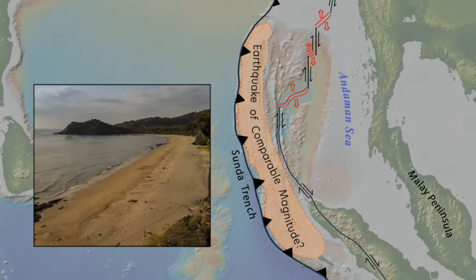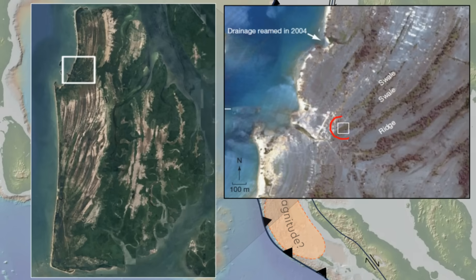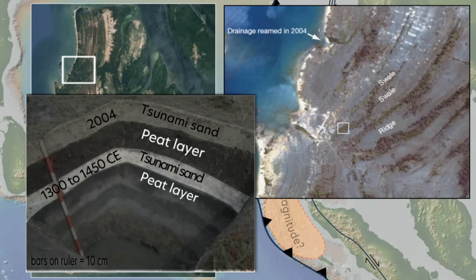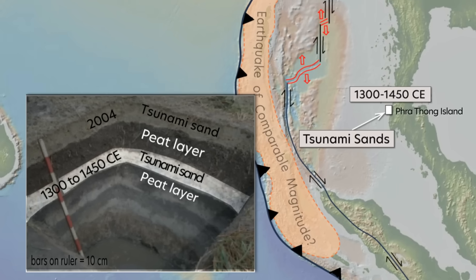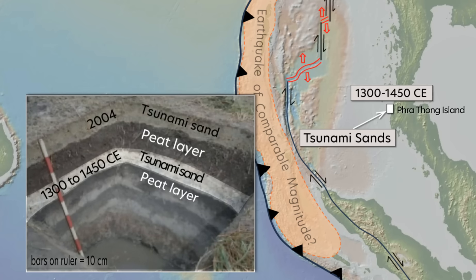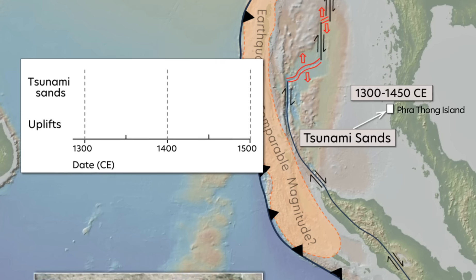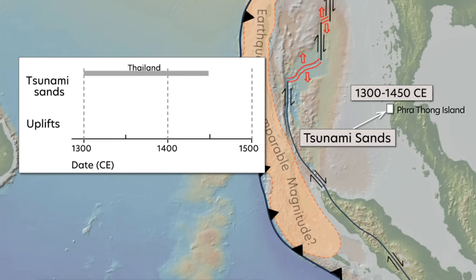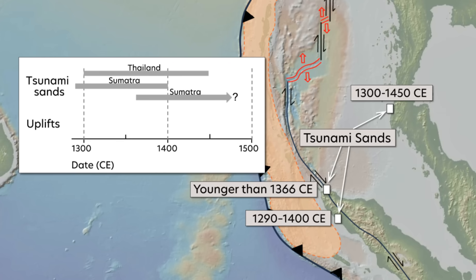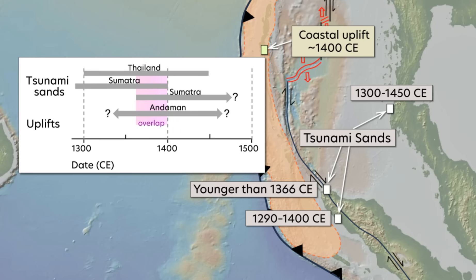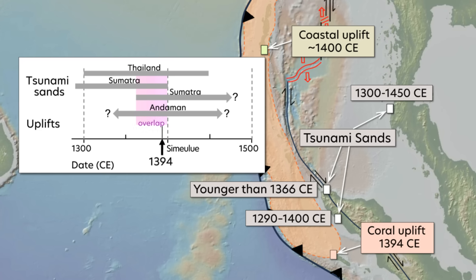Although there is no written history of when the last comparable-sized earthquake and tsunami occurred across this region, a history written in sand provides evidence that it was over 600 years ago. On Thailand's Prathong Island, the 2004 tsunami sand overlays an older tsunami sand sandwiched between peat layers. Radiocarbon dates bracket the age of the older tsunami sand between 1300 and 1450 CE. Two sites in northern Sumatra have tsunami sands dating between 1290 and 1400 CE and younger than 1366 CE. Uplift of a marine terrace in the Andaman Islands occurred around 1400 CE, while coral growth rings precisely date an uplift of northern Simeulue Island in 1394 CE. If all of these tsunami sands and uplifts were produced by a single predecessor to the 2004 Sumatra-Andaman earthquake and tsunami, that event occurred in 1394 CE.